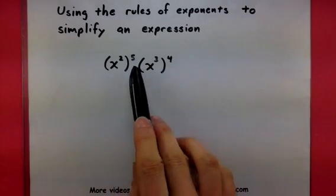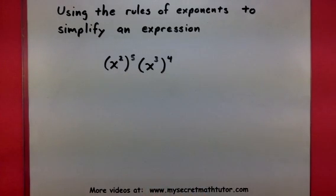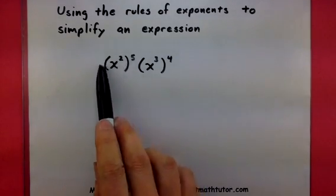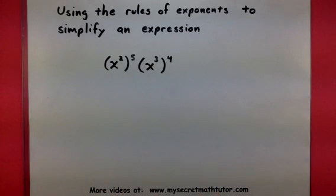I have x squared raised to the fifth power, and x cubed raised to the fourth power. And the first rule I'm going to use to help me out is known as the power rule. You can use this rule when you have an exponential expression, and it is in turn raised to an exponent itself.